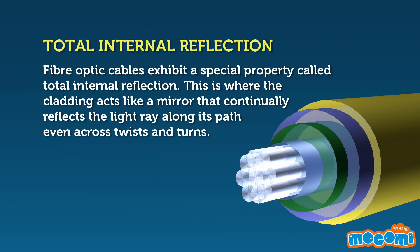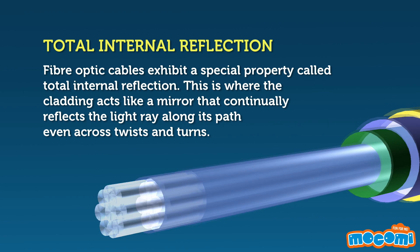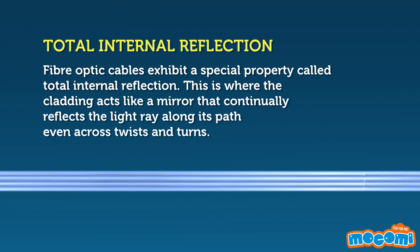Fiber optic cables exhibit a special property called total internal reflection. This is where the cladding acts like a mirror that continually reflects the light ray along its path, even across twists and turns.